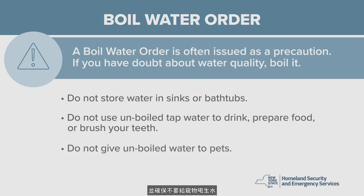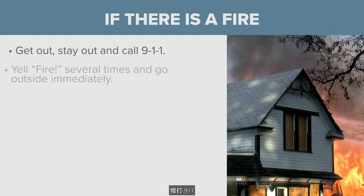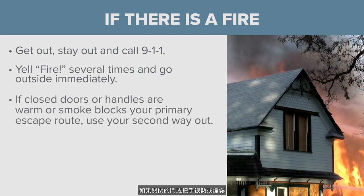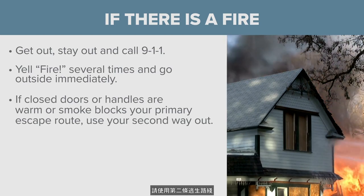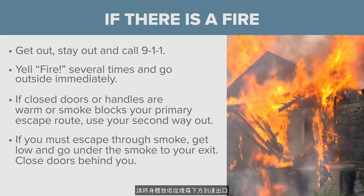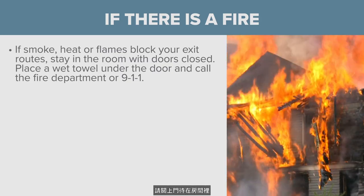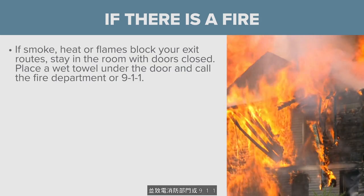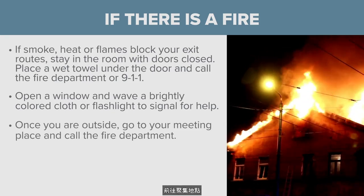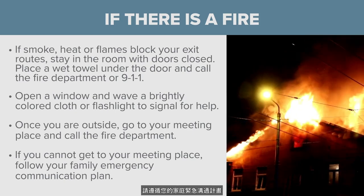If you experience a fire, the first rule is get out, stay out, and call 911. Yell 'fire' several times to alert anyone who may be in the vicinity and go outside immediately. If closed doors or handles are warm or smoke blocks your primary escape route, use your second way out. Never open doors that are warm to the touch. If you must escape through smoke, get low and go under the smoke to your exit — be sure to close doors behind you. If smoke, heat, or flames block your exit routes, stay in the room with doors closed. Place a wet towel under the door and call the fire department or 911. Open a window and wave a brightly colored cloth or flashlight to signal for help. Once you are outside, go to your meeting place and then send one person to call the fire department.